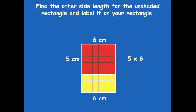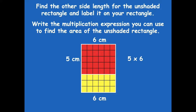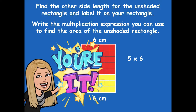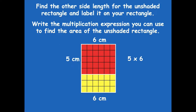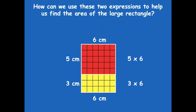Find the other side length for the unshaded rectangle and label it on your template. Pause the video, then write a multiplication expression to find the area of the unshaded rectangle — just like we did for the top, now we'll do the same thing for the bottom. The side length I came up with was 3 centimeters — you can just count those cubes. So 3 times 6 would be how I find the area of the unshaded rectangle.